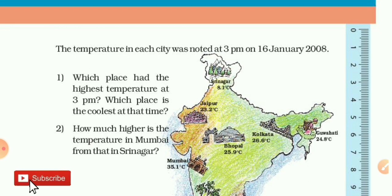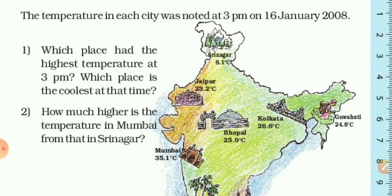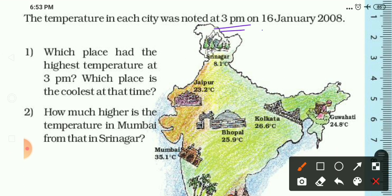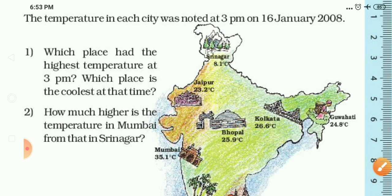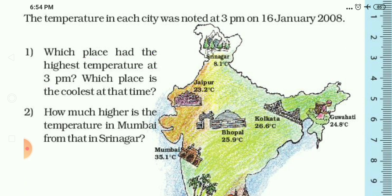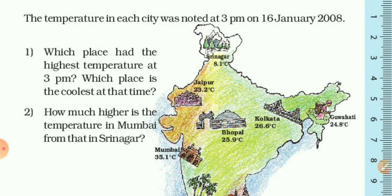The map shows temperatures of different cities of India at 3 PM on 16 January 2008. You can see Srinagar is at 8.1 degrees Celsius, Jaipur at 23.2 degrees Celsius, and so on. The first question is: which place had the highest temperature at 3 PM? By observing the map we can say that Mumbai had the highest temperature, which is 35.1 degrees Celsius.